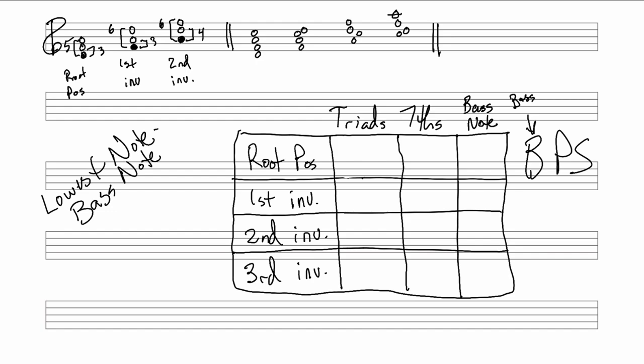For first inversion, the intervals created are a sixth and a third. It was decided centuries ago to just refer to this as a six, so the symbol is simply '6.' For second inversion, since we already have six as a symbol, we add the four and call it a '6-4.' There are no third inversion triads because we run out of notes.